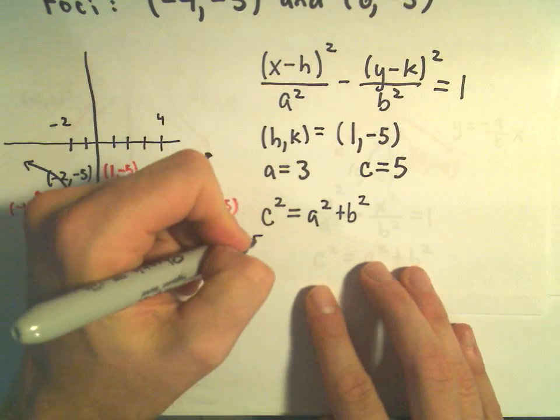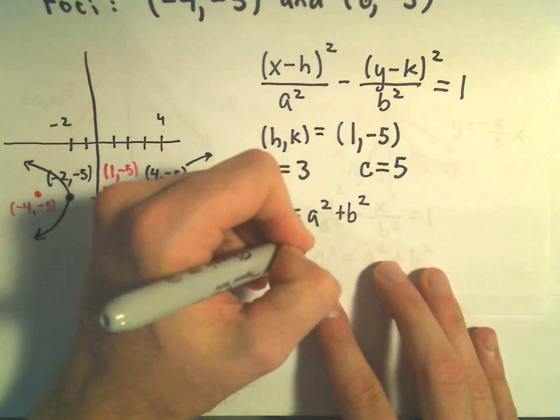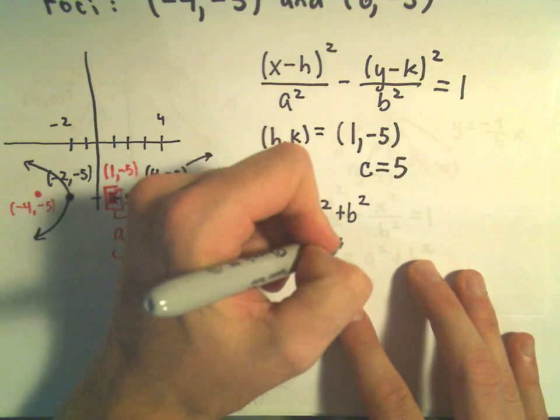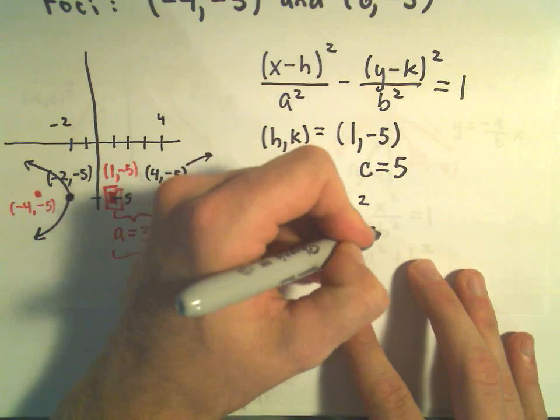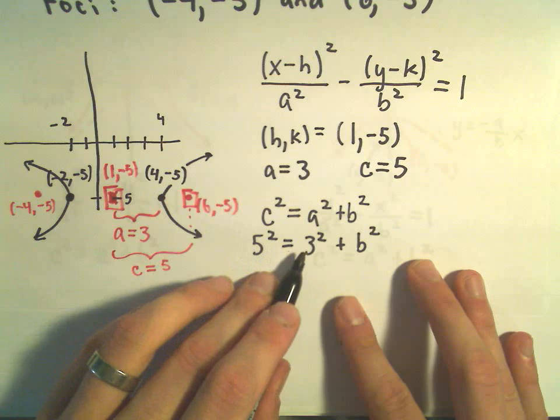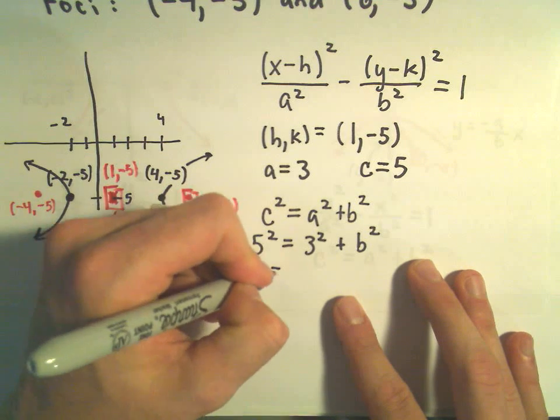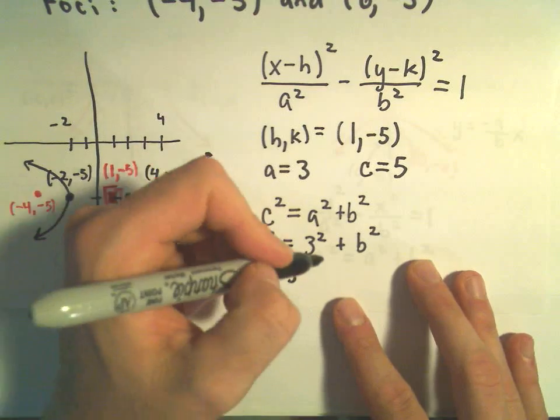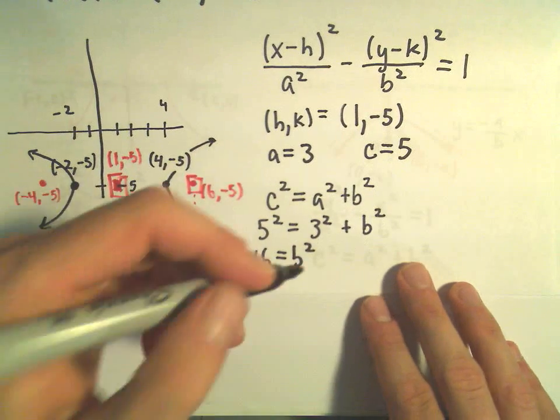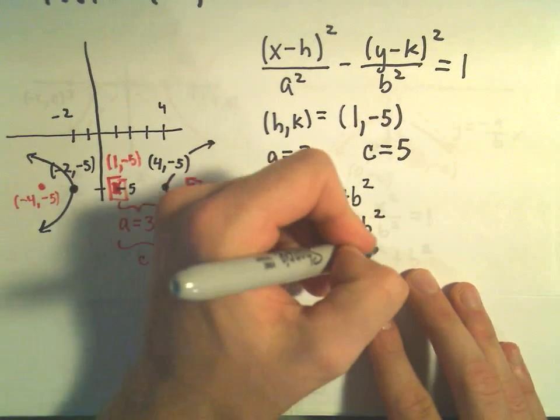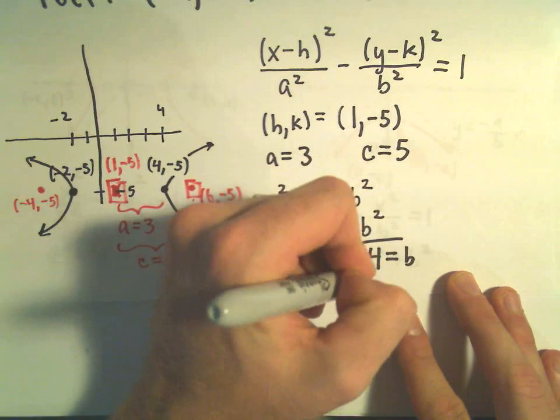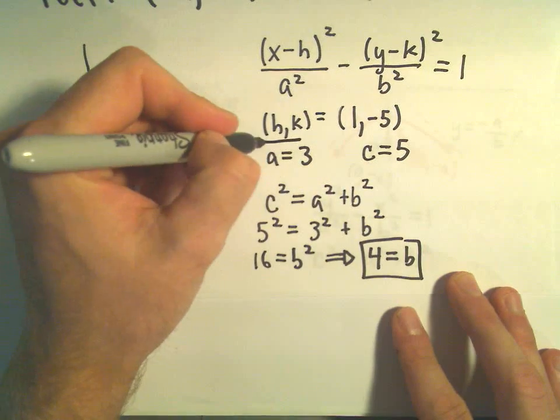So, it says we'll have 5² equals 3² plus b². Well, this is 25. This is 9. If we subtract 9 from both sides, we'll get 16 equals b². And if we solve for b, again, we can take the square root. We're just going to keep the positive solution. So, we're going to use our b value of 4.